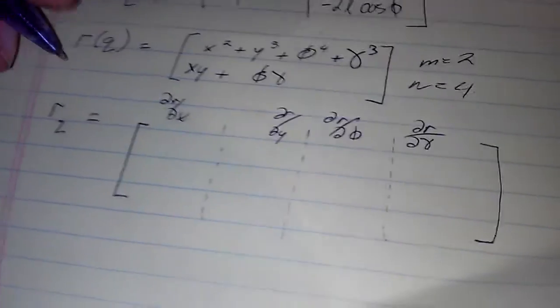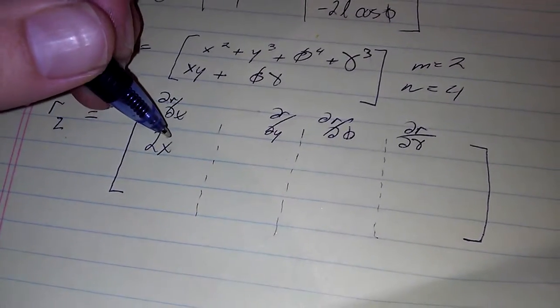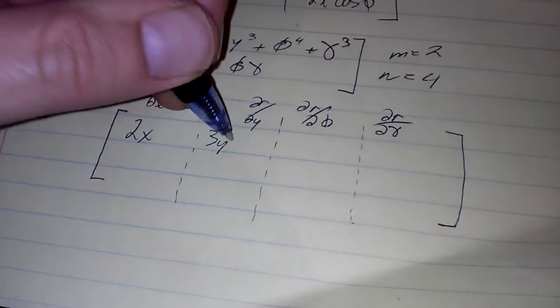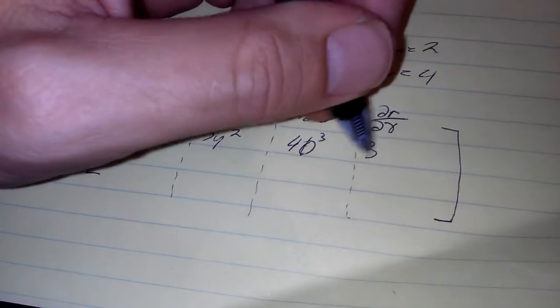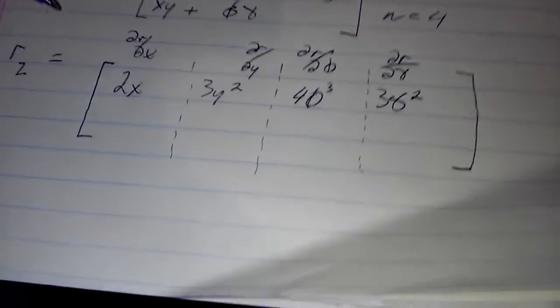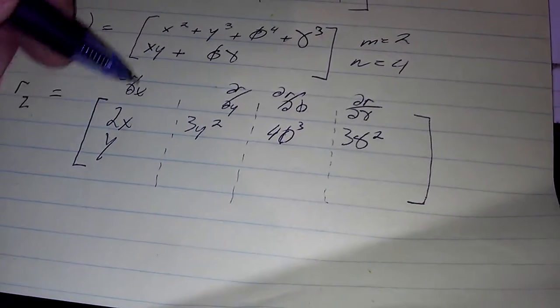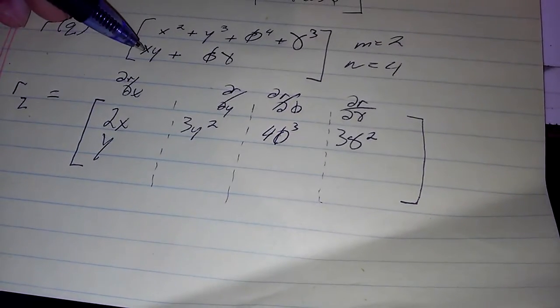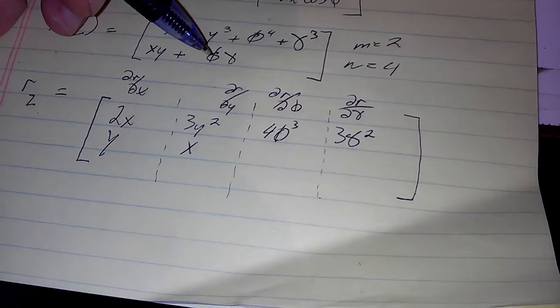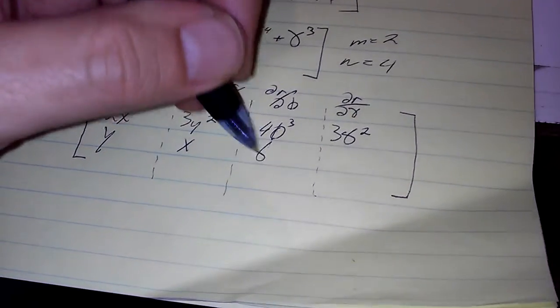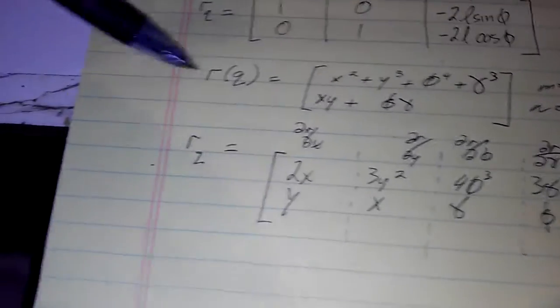So let's take a look at what we have. First row: 2x, we have 3y squared, 4 phi cubed, and 3 gamma squared. On the second row we have y—the derivative of xy plus this with respect to y is x—derivative of this partial phi is gamma, and the derivative of this partial gamma is phi.